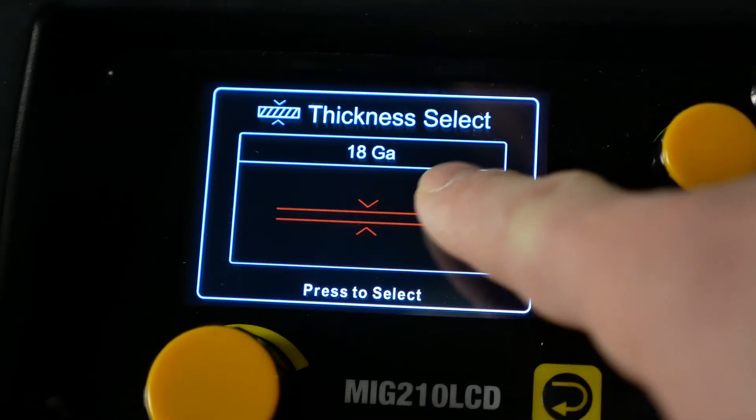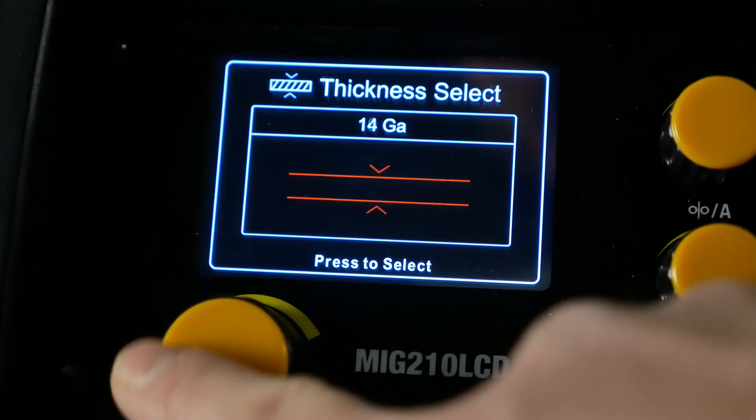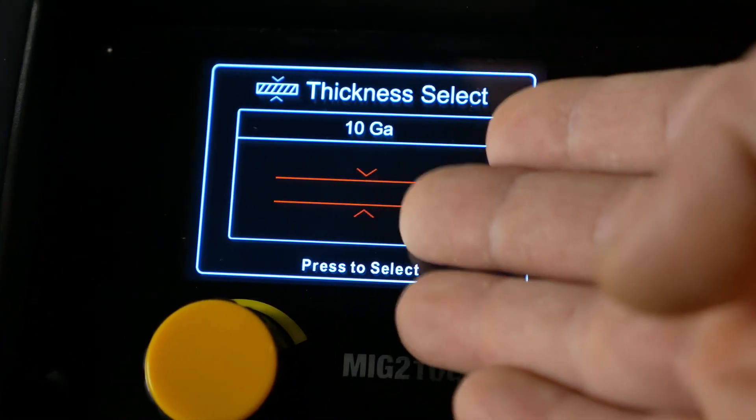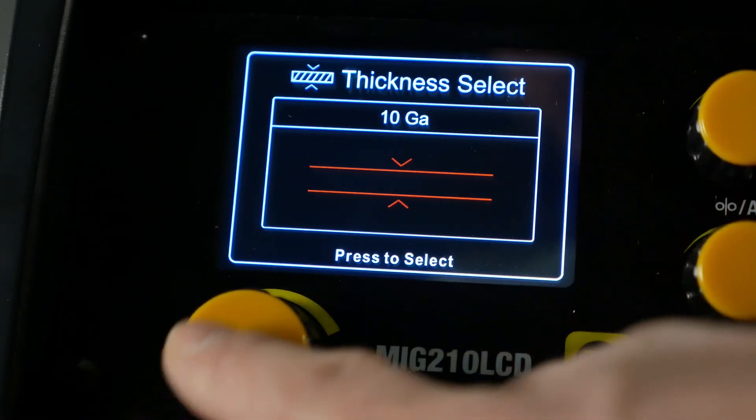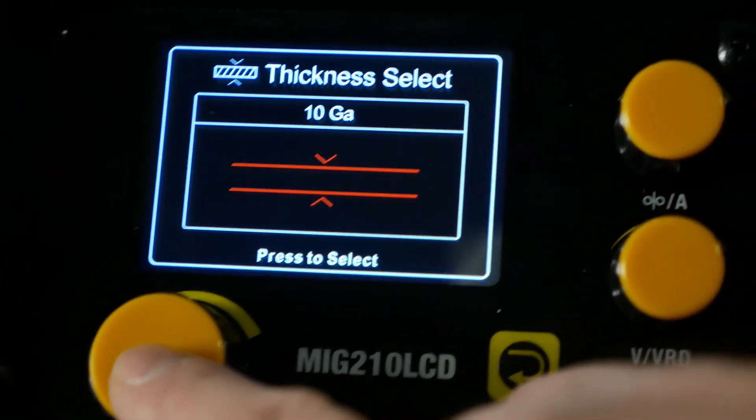Next, the machine will prompt you for material thickness. If you don't know what this is, you can set it to the maximum, but if you do know what it is, the machine will help make recommendations to your welding process that will make you more successful.